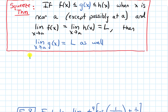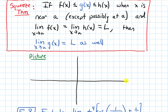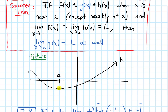Let's draw a picture to visualize why this is true. I'll draw some axes and label a point a on the x-axis. Based on the chain of inequalities, h(x) is the highest function, so I'll draw a curve and label it h. The limit as x approaches a of h(x) is L, so I'll mark L on the y-axis. Then f(x) needs to be the lowest function — it's lower than h(x), but its limit as x approaches a also needs to be L. So f is the lowest function.